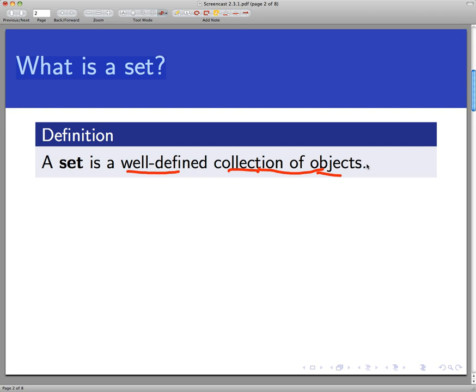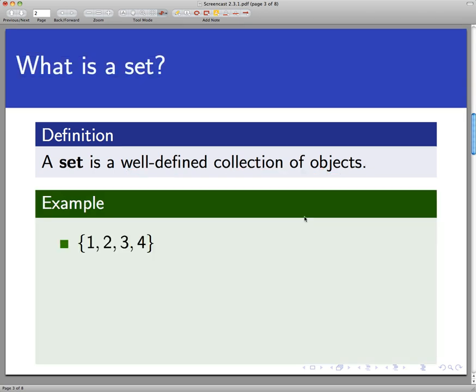So here's some quick numerical examples just mainly to fix down some notation. This set here consists of four objects, namely the numbers one, two, three, and four. The way that I'm writing this set, first of all notice the curly braces that I'm using to denote the beginning and the ending of the set. That's very common standard notation for how we write sets.